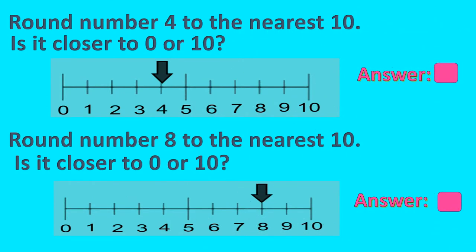Now let's see these two examples. Round number four to the nearest ten. Is this number four closer to zero or ten? With the help of this number line we can make out that this number four is closer to zero. So we will be rounding this number to zero. Quite easy, isn't it?